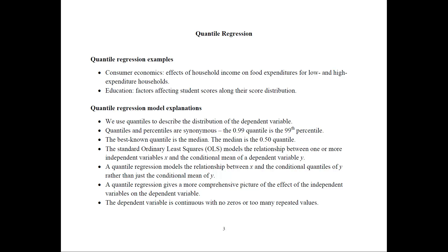We use quantiles to describe the distribution of the dependent variable. Notice that we are not talking about the independent variables — we will only concentrate on the dependent variable and how it is distributed. Quantiles and percentiles are synonymous. So if I say the 0.99th quantile, that's the same as the 99th percentile. And the best known quantile is the median, which is the 0.5 quantile.